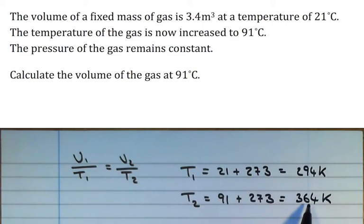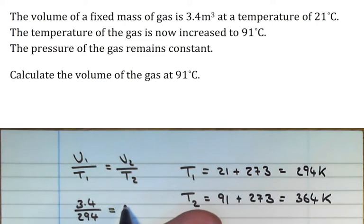And now that we've worked this out, we can then substitute these values into our equation here. We know that the initial volume is 3.4. As we said, at the initial temperature now, we know in Kelvin, so 294, and that's equal to V2 is actually what we're trying to work out. So we just write V2 in the equation, divided by our final temperature here of 364 Kelvin.